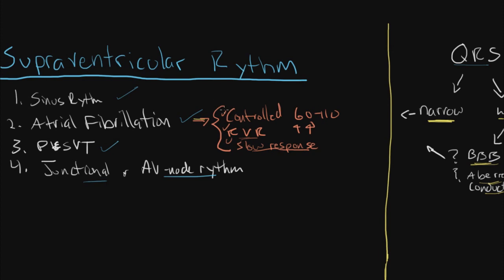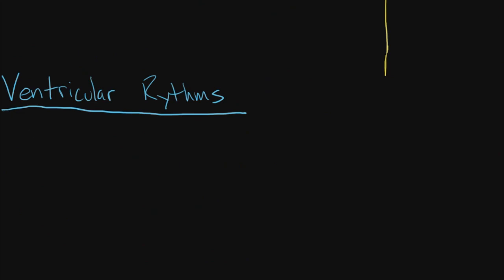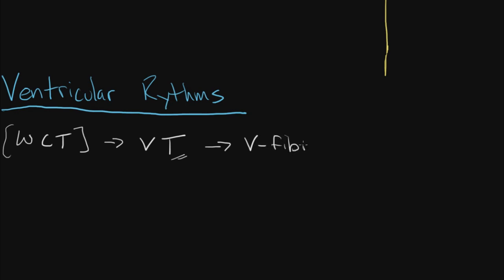Let's move on from supraventricular rhythms to ventricular tachycardias or ventricular rhythms. If you see tachycardia with a wide QRS, that's known as a wide complex tachycardia. This is a very concerning sign because wide complex tachycardia is often a sign of VT — ventricular tachycardia. Ventricular tachycardia is a concern because it can lead to cardiac arrest. It's usually progressive to V-fib, which is ventricular fibrillation where your heart is no longer pumping, and eventually cardiac arrest. Anytime you see anyone in ventricular tachycardia or ventricular fibrillation, the answer is always immediate defibrillation.